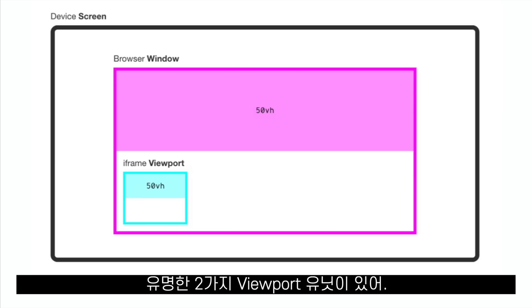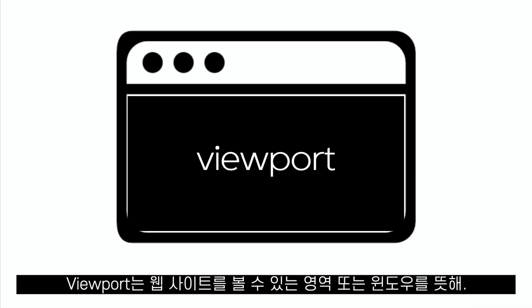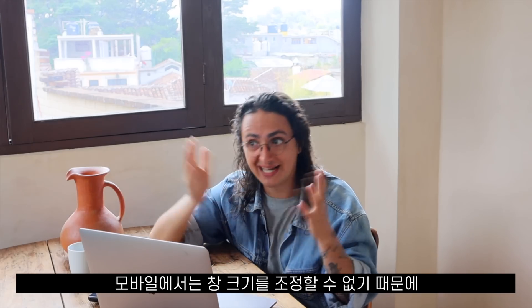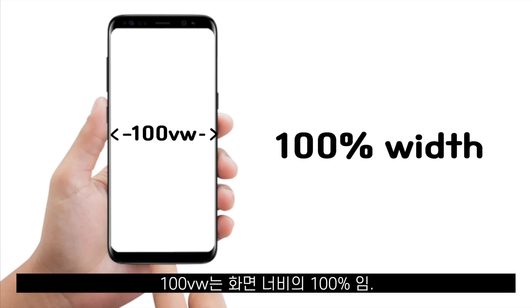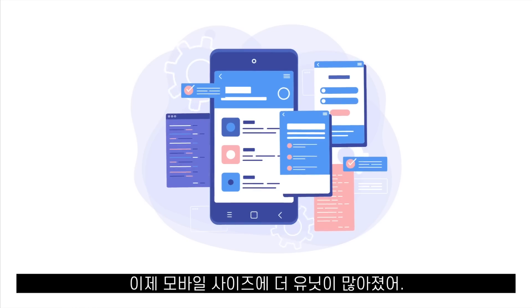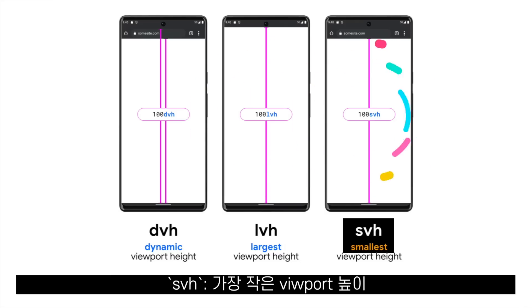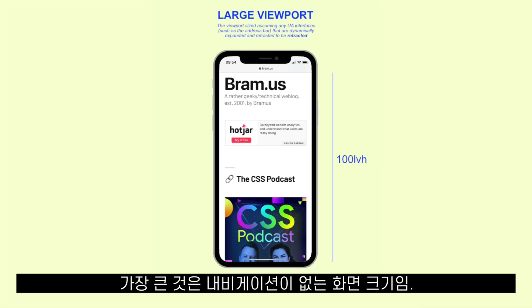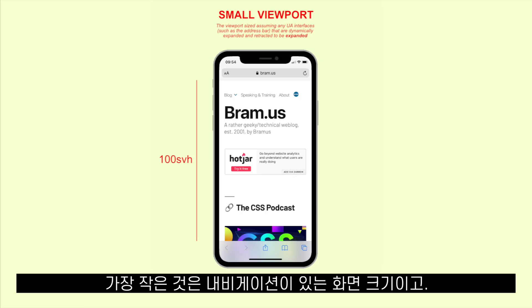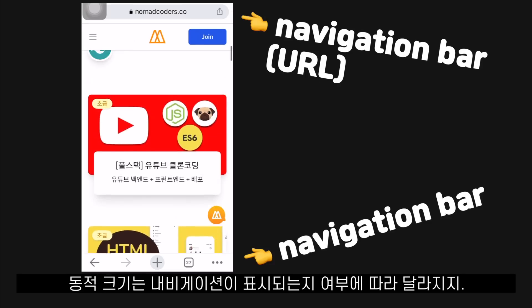There are two well-known viewport units: VW and VH. VW gives you the viewport width and VH gives you the viewport height. On mobile screens, 100VH gives the total screen height and 100VW the total screen width. Now we have even more units for mobile: LVH (largest viewport height), SVH (smallest viewport height), and DVH (dynamic viewport height). Largest is the screen size without the navigation bar, smallest is with the navigation bar, and dynamic changes depending on whether the navigation bar is shown.